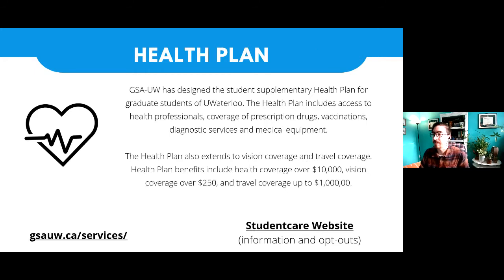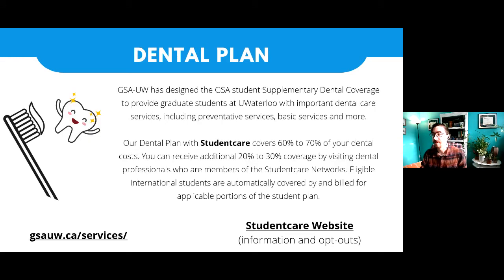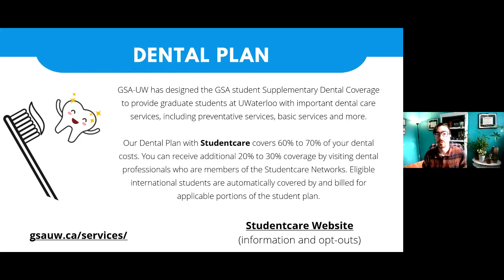The GSA has a health plan for graduate students through the company Student Care. The health plan includes access to health professionals, coverage of prescription drugs, vaccination, diagnostic services, and medical equipment, with health coverage up to $10,000, vision coverage, and travel coverage. The dental plan is supplementary dental coverage for graduate students — also partnered with Student Care — covering up to 60 to 70% of dental costs, with an additional 20 to 30% coverage possible if visiting professionals within the Student Care network. International students are automatically covered and billed for this plan.